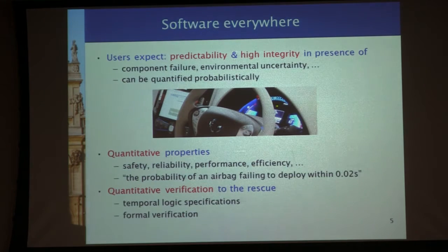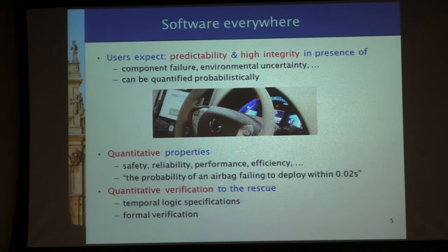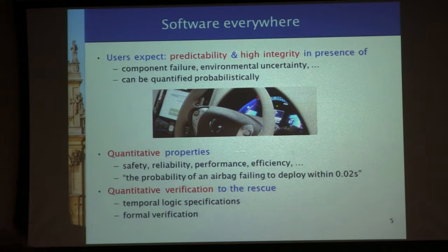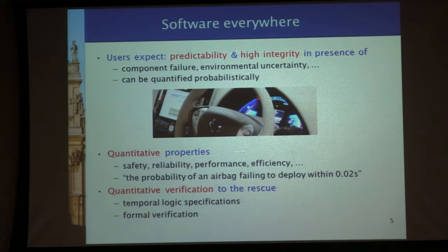There is software everywhere. The software is designed by computer scientists like me and perhaps computer science students. But at the same time, users expect predictability and high integrity — and this is in the presence of a lot of uncertainty. There could be component failure, a lot of environmental uncertainty due to sensors, and a changing situation. If you think about driving on the road, you have other cars and traffic changing constantly. But this uncertainty can be quantified probabilistically.